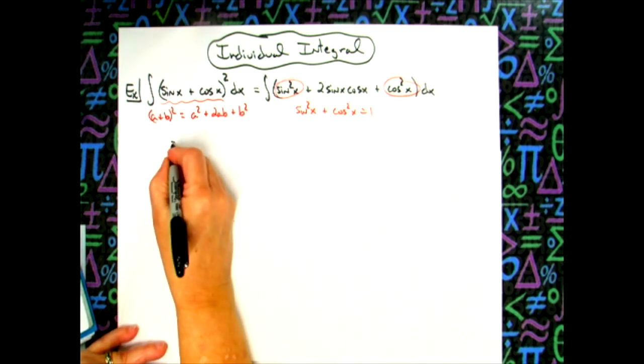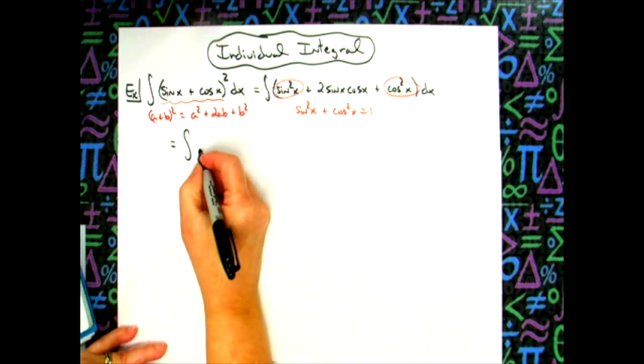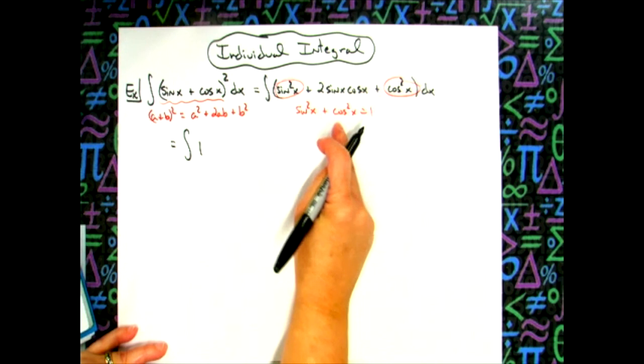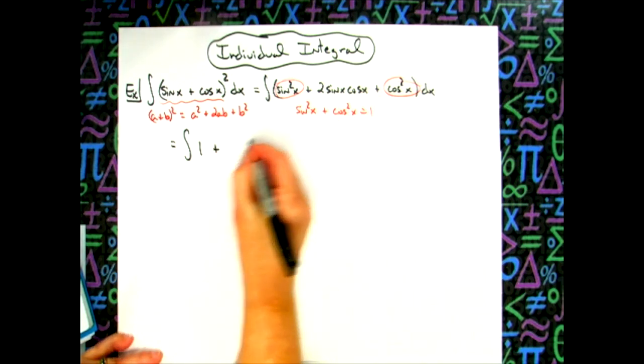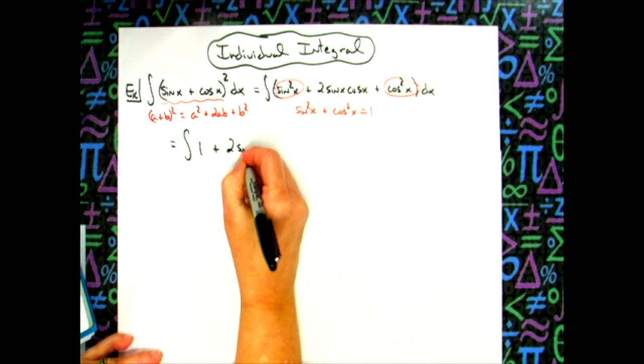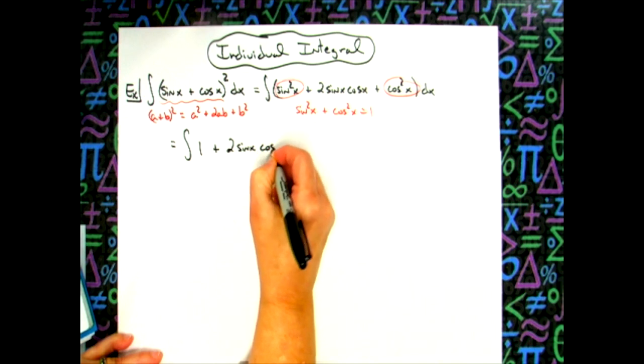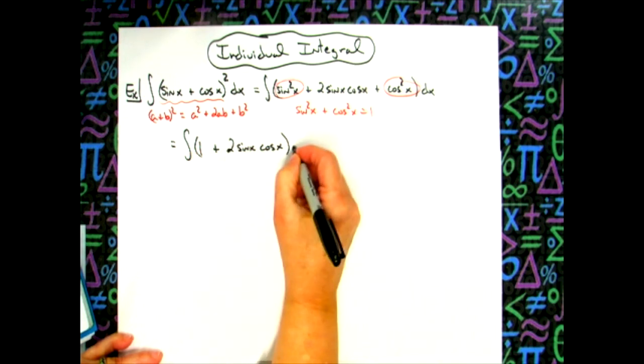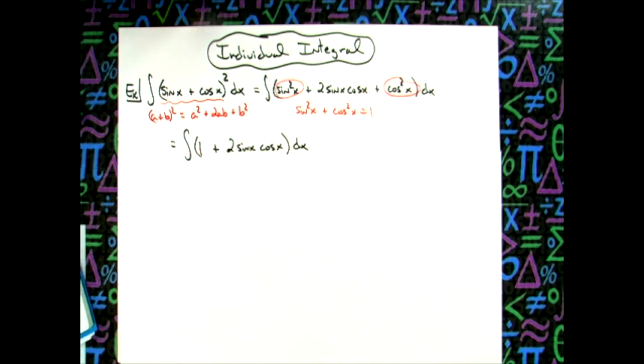So then we're going to have the integral of one, putting those two together and replacing there, plus our two sine x cosine x. We'll put a set of parentheses around that dx.